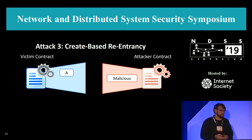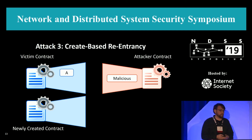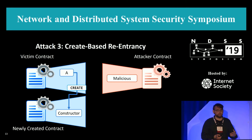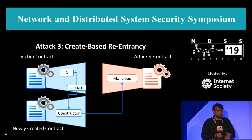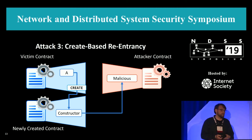The third attack is create-based re-entrancy. Here it's similar — we have two contracts involved on the victim's side: the victim contract and a newly created contract. Function A is assumed not to be re-entrancy safe, but it doesn't perform an external call directly. Instead, it will create a new contract with the create instruction, and the create instruction immediately triggers execution of the constructor. The constructor can do anything, including calling to the attacker. So if you analyze function A, there's no external call, and you might conclude there's no re-entrancy bug — but the constructor of the newly created contract actually performs the external call, so the attacker could re-enter function A and it becomes vulnerable.